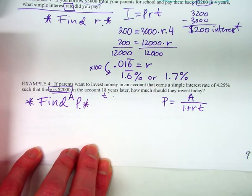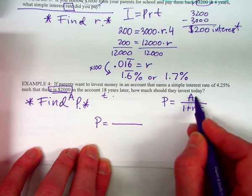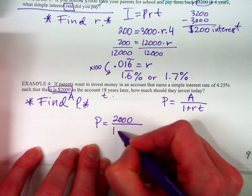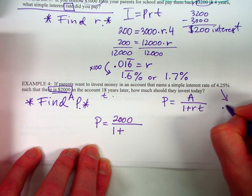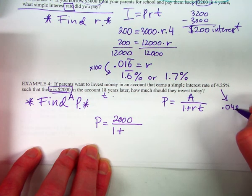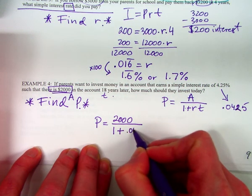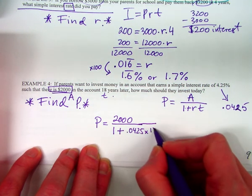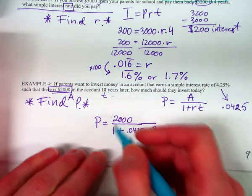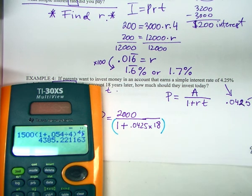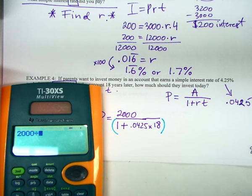And now we just substitute for all the variables that we know. So P equals A is the amount that they want at the end. So that's the 2,000. Over 1 plus, what's this rate as a decimal? 0.0425. But then what do we have to multiply it by? 18. Now when you're doing this on your calculator, what's very important is you can do it all in one step, but the parentheses are important. So if I try this, I would do 2,000 divided by, open parenthesis, 1 plus 0.0425 times 18, and then close parenthesis. You could just type this all in.